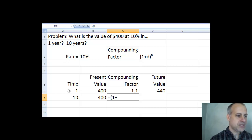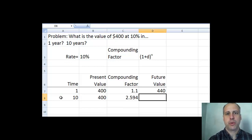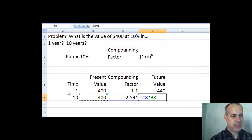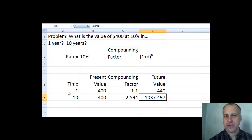So this is parentheses equals 1 plus our interest rate in cell B3, raise to the caret, A8, our number of periods n, gives us a compounding factor of 2.594. Multiply the compounding factor times the present value, and we find out that our $400 is worth $1,037.50 in 10 years.